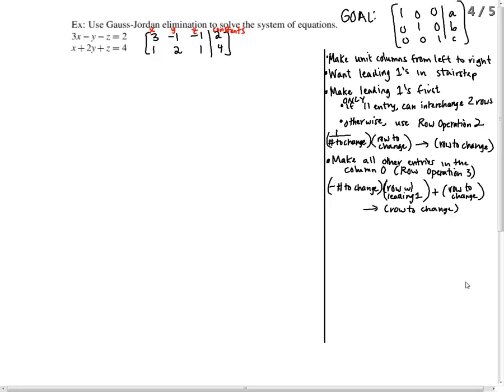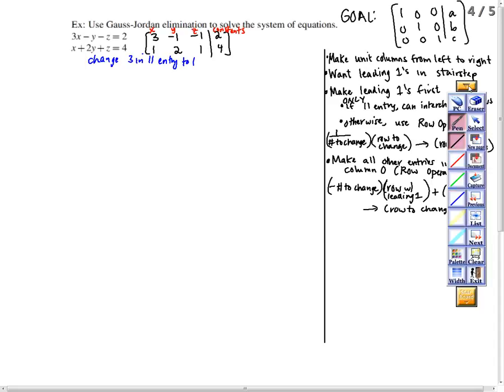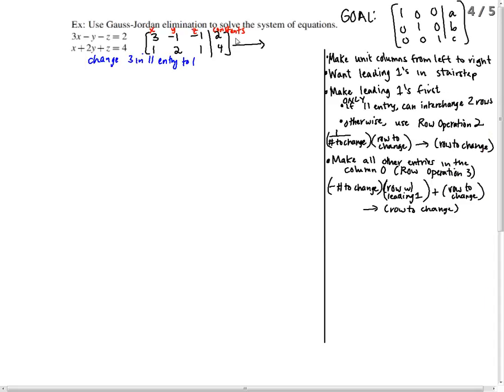Okay, so we want to change that 3 right here, change the 3 in the 1,1 entry to a 1. I can multiply everything by 1 third, which gives me a 1 here, but then I'd have fractions. If you don't want to do that for the first step, you can just interchange two rows if there's a 1 in that same column. And there is for us. So I would do row 1 and interchange that with row 2.